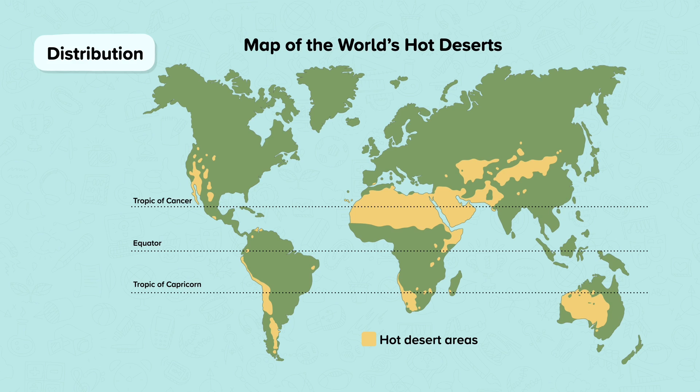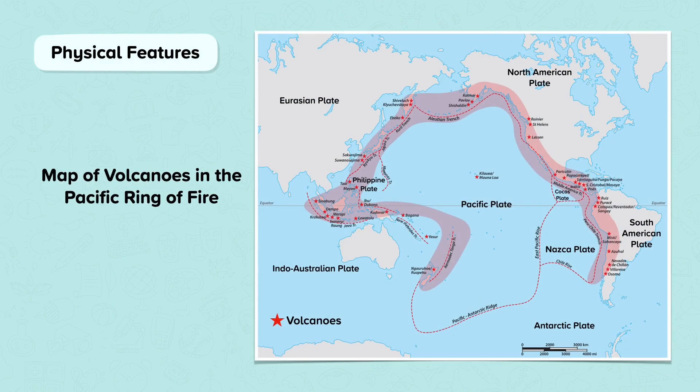Hot deserts are an example of physical features that are shown on maps. Other examples include rivers or volcanoes. In this example, we can see that volcanoes are distributed in a linear pattern, which is closely related to where the constructive and destructive plate margins are located.